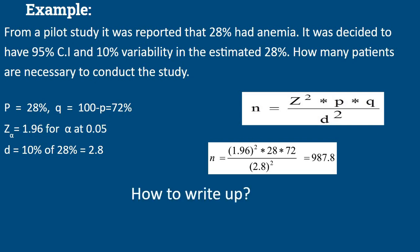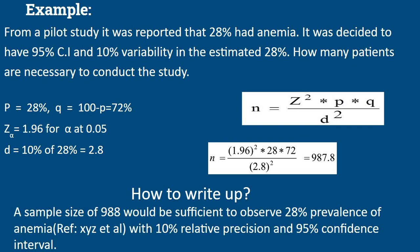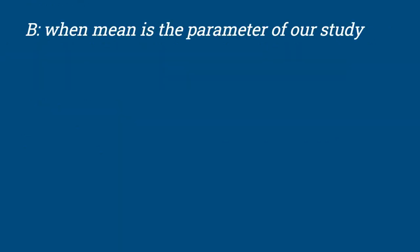Now how to write this up in a protocol or research article: a sample size of 988 would be sufficient to observe 28% prevalence of anemia with 10% relative precision and 95% confidence interval.